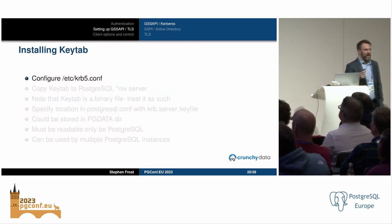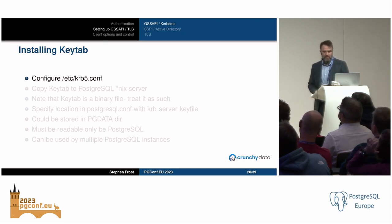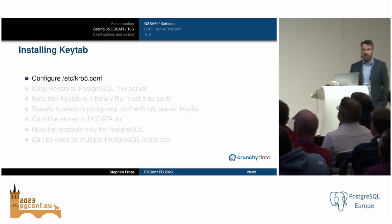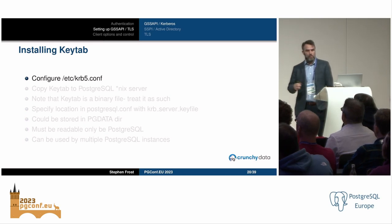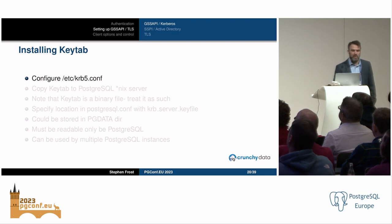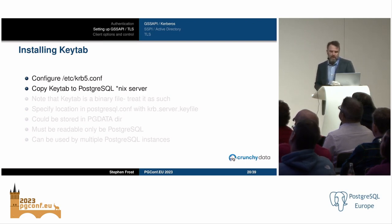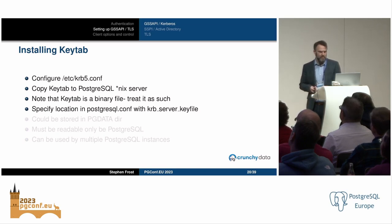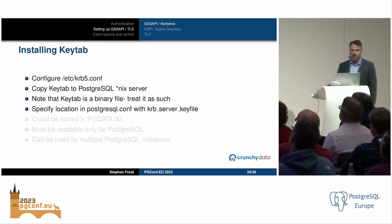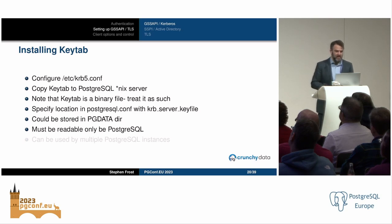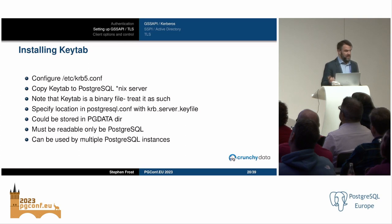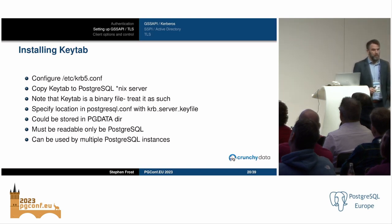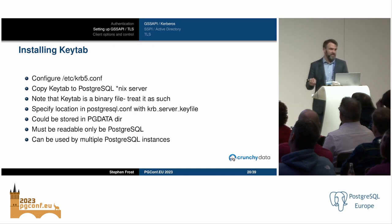You have to copy the keytab file — it's a binary file, so be careful when copying it around. You can tell Postgres where the keytab file is using the krb_server_keyfile option in postgresql.conf. You could store it in the pgdata directory if you want — it must be readable only by Postgres. It can also be used by multiple different Postgres instances on that system if desired.